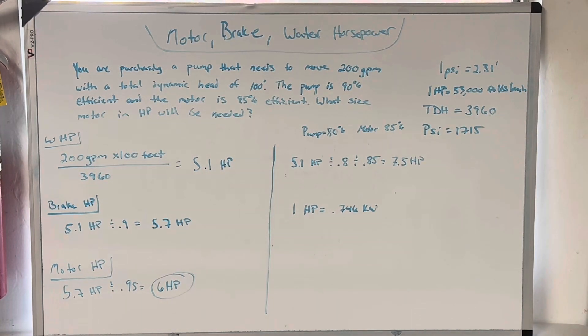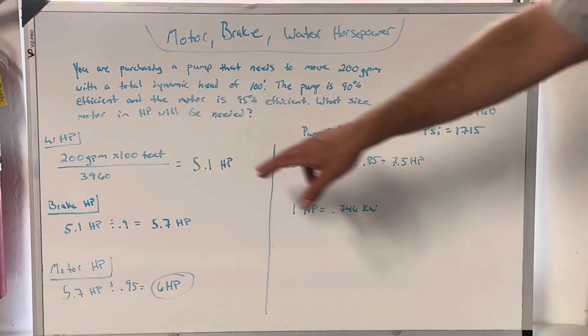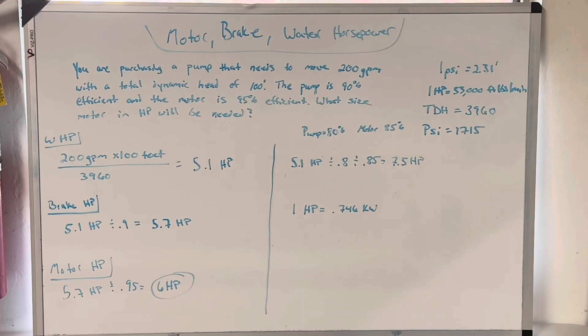Here's the math problem. You are purchasing a pump that needs to move 200 gallons per minute with a total dynamic head at 100 feet. The pump is 90% efficient and the motor is 95% efficient. What size motor in horsepower will be needed? So first is water horsepower. This math problem is very simple. I'm not going to go through the whole conversion factor method on it. When you're given equations that are this simple, I don't worry about canceling out units. So it is flow in gallons per minute times TDH, total dynamic head in feet divided by 3960.